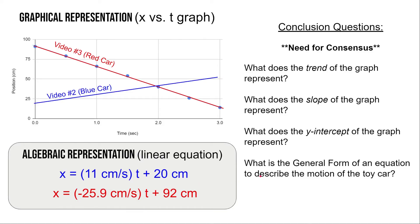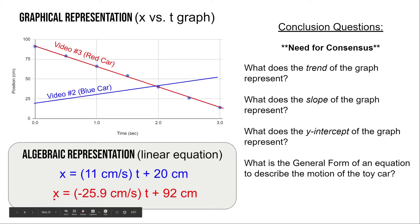The last thing we're going to do is figure out a general form of an equation that we can use to describe the motion of any toy car or any object that moves like a toy car. Remember, these specific equations only tell us the position of one particular car at a given time — the blue car in video 2 or the red car — and we want to generalize our results, not just have specific results.